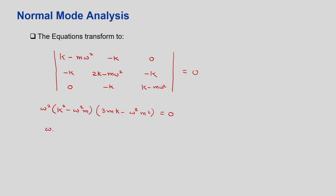The solutions are: ω1 = 0, ω2 = 0 (two solutions); ω3 = ±√(k/m); ω4 = ±√(3k/m). So we have 6 solutions total: two zero solutions, two from ±√(k/m), and two from ±√(3k/m). We will now substitute each value of ω back into the equations to find the displacement relationships.